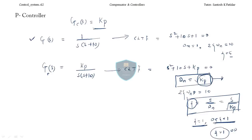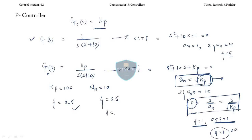If you keep Kp equal to 100, omega_n will become 10, and your zeta will become 0.5 — the system becomes underdamped. If you keep Kp equal to 25, you will get zeta equal to 1, a critically damped system. So whatever you want, you can do — it is your choice.